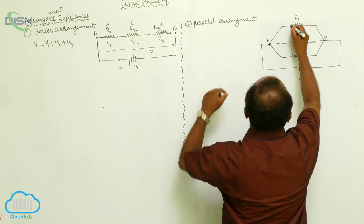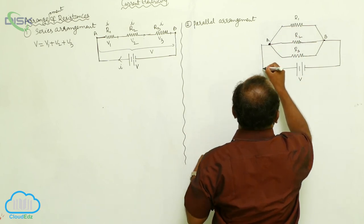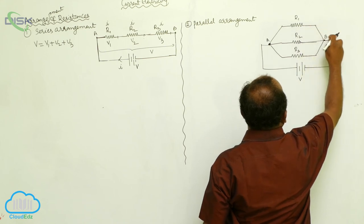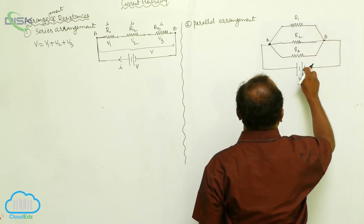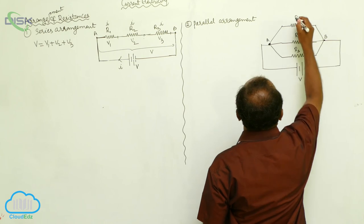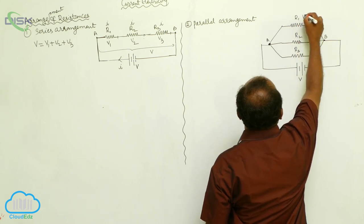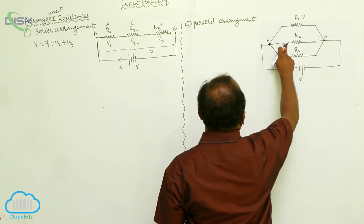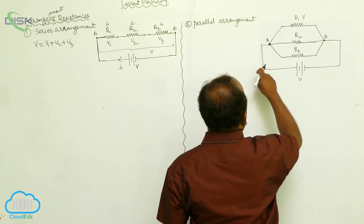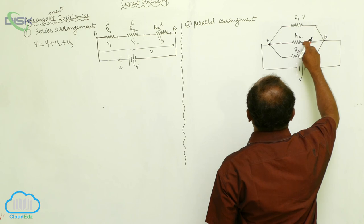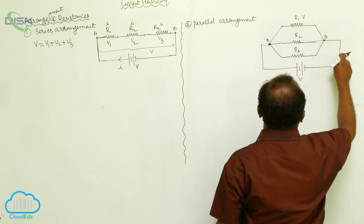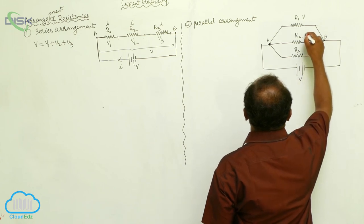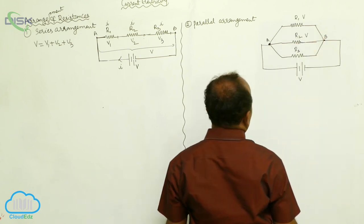In the parallel arrangement, the potential difference supplied by the battery is V. The first terminal of each resistance is connected to the positive terminal, and the second terminal of each resistance is simultaneously connected to the negative terminal. Therefore, the same potential difference V appears across each resistance — across the first resistance it is V, and across the second resistance it is also V.